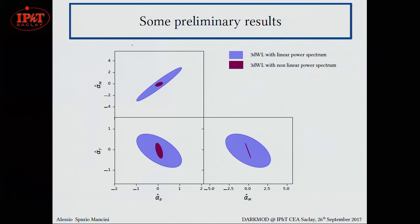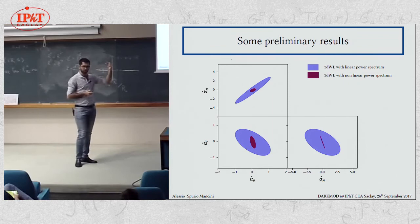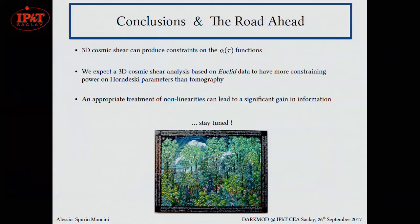Maybe this point is even clearer looking at these constraints. I'm putting only 3D weak lensing results. And you see how the contours, one sigma contours, shrink using the non-linear matter power spectrum.